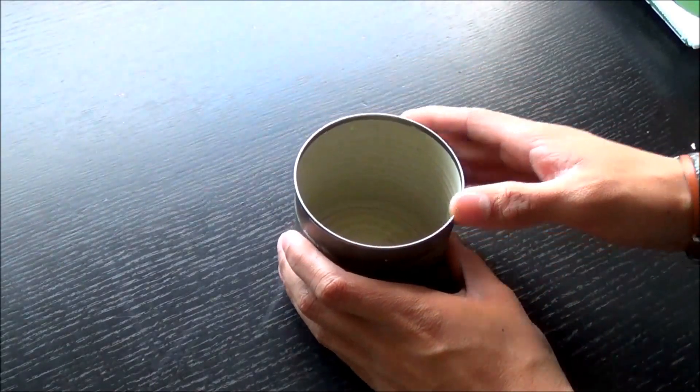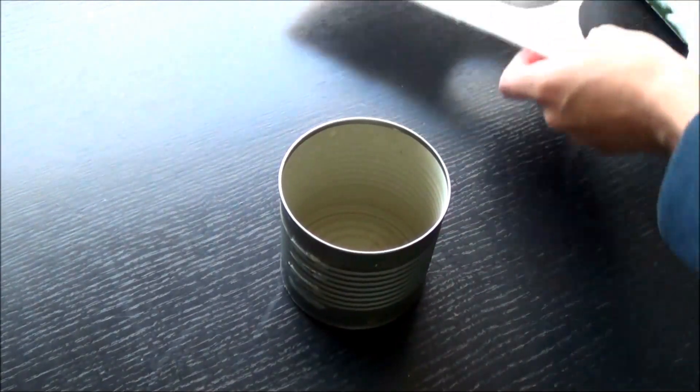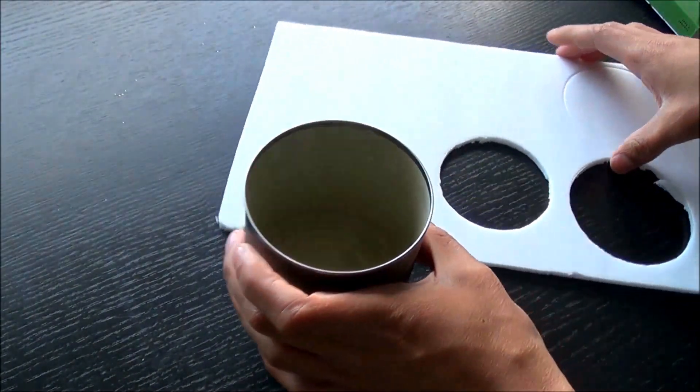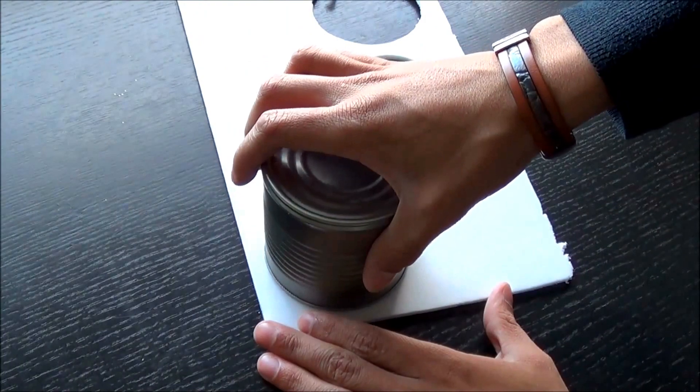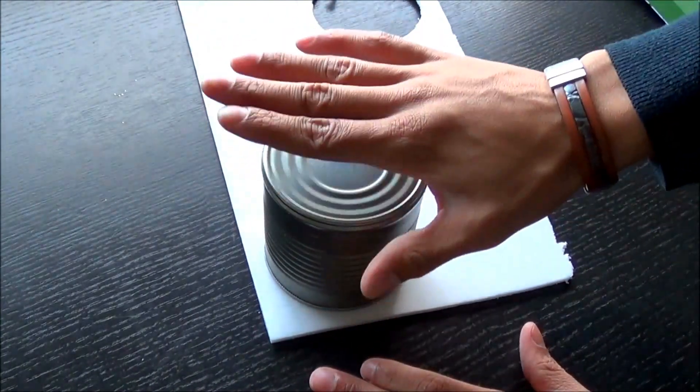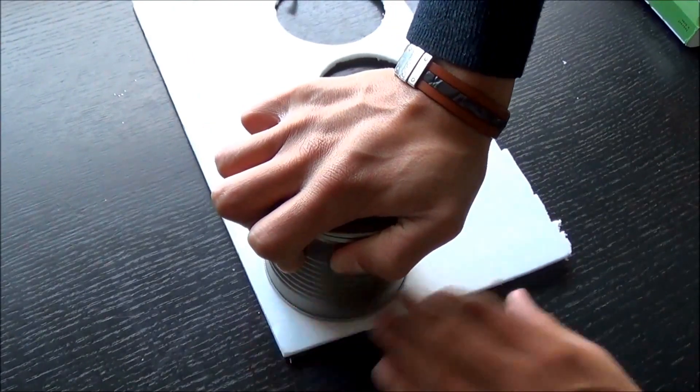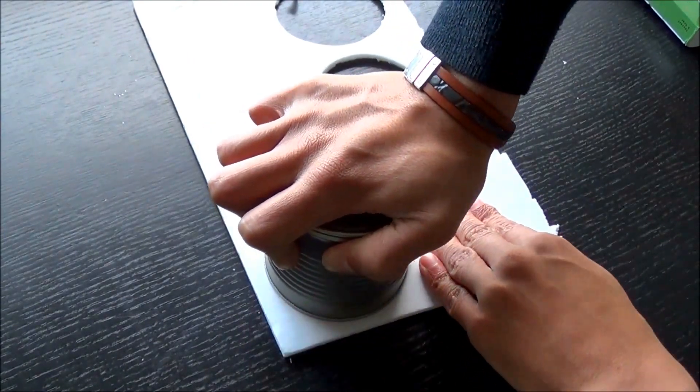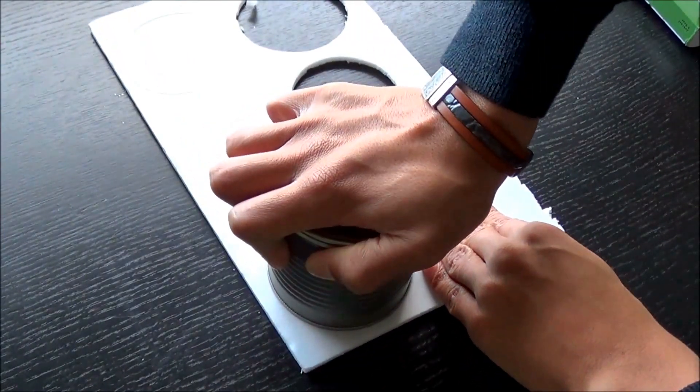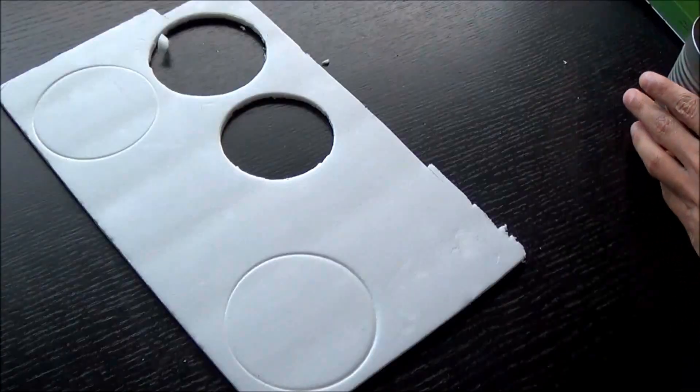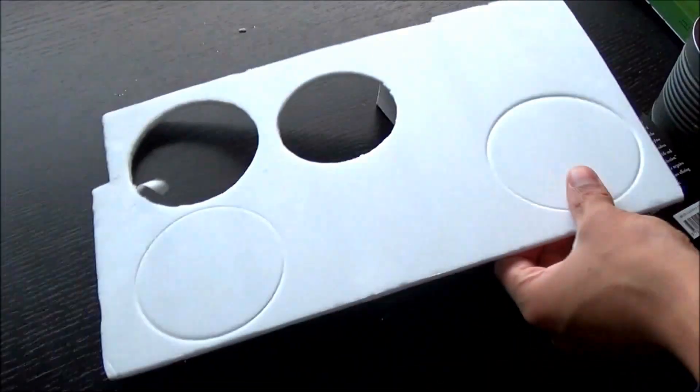Now I grabbed a can, this can has a diameter of eight centimeters. I'm going to use the same piece of foam board that we stripped the paper off of. As you can see I've already done a few other wheels, but we're going to push the can into it to make a nice big outline of a circle with a diameter of eight centimeters and it's going to act as a wheel.